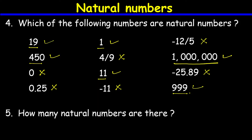Question number five: how many natural numbers are there? Natural numbers are 1, 2, 3, 4, 5, and so on — it never ends. Natural numbers are infinite. Therefore the answer to this question is infinitely many; natural numbers are infinitely many.